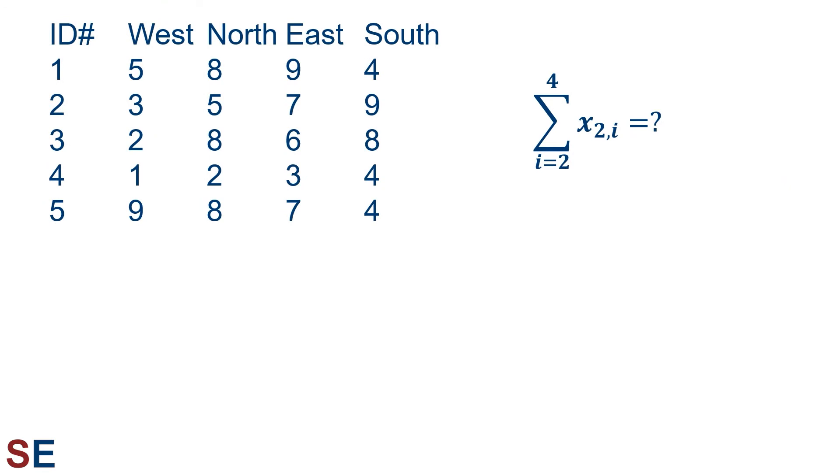Let's quickly look at another example of this. The sum of x 2 comma i from i equals 2 up to i equals 4. Starting with i equals 2, the first term would be x 2 comma 2. Then i increases to 3, so the next term is x 2 comma 3. Then i increases to 4, so the next term is x 2 comma 4. Finding these in the table and then adding them up gives us 5 plus 7 plus 9 equals 21.